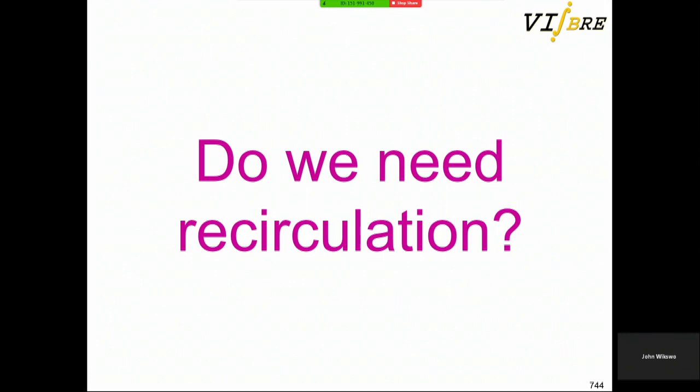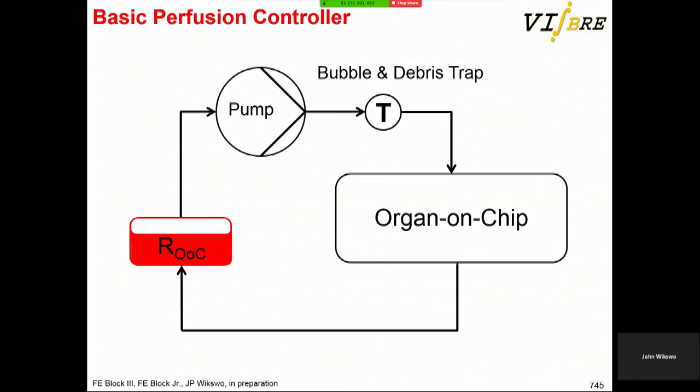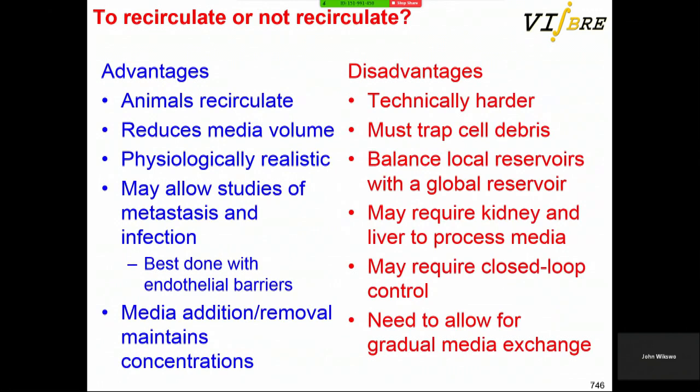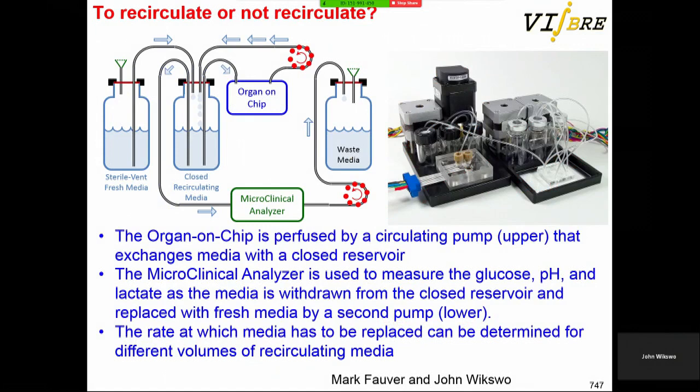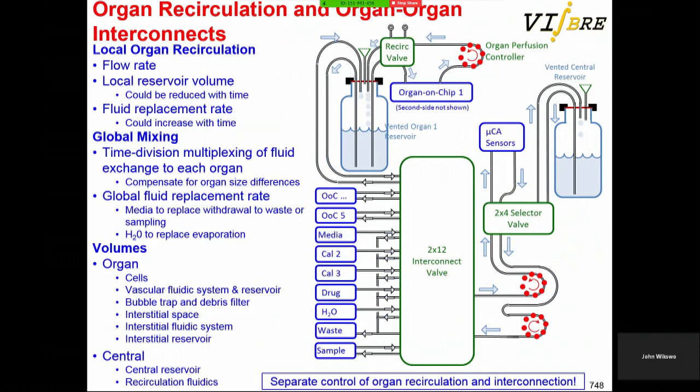Do we need recirculation? The idea is you have a pump and a bubble and debris trap for the organ on a chip. I think you're going to need recirculation — animals recirculate, and biology in the lab needs to as well. We've come up with topologies to adjust the volume being recirculated and most importantly the media replacement rate, with a microclinical analyzer as an electrochemical sensor to test for glucose depletion and lactate buildup.